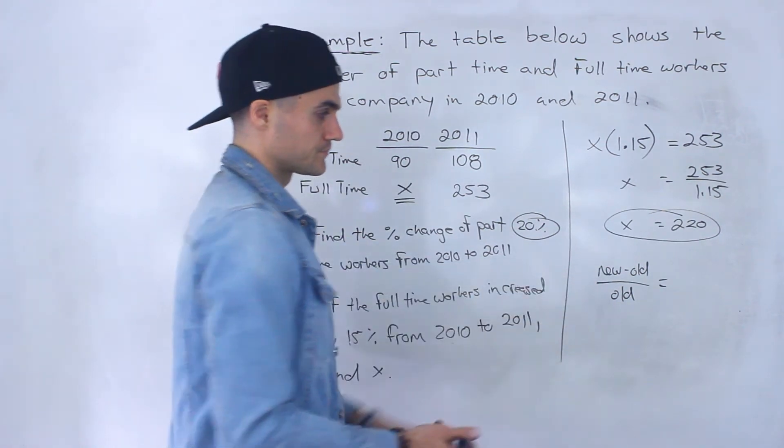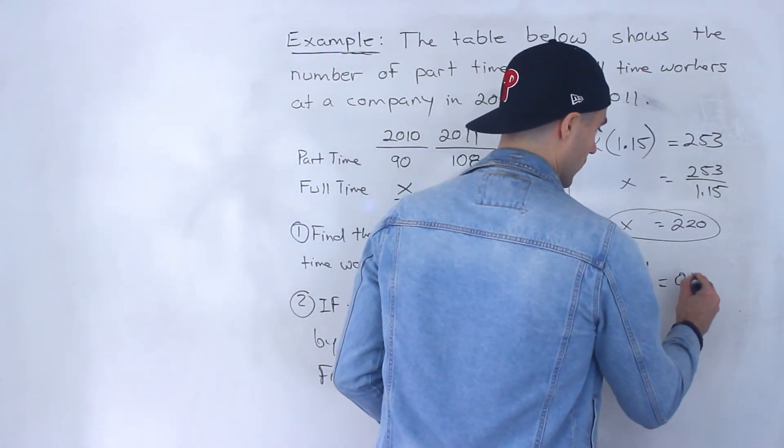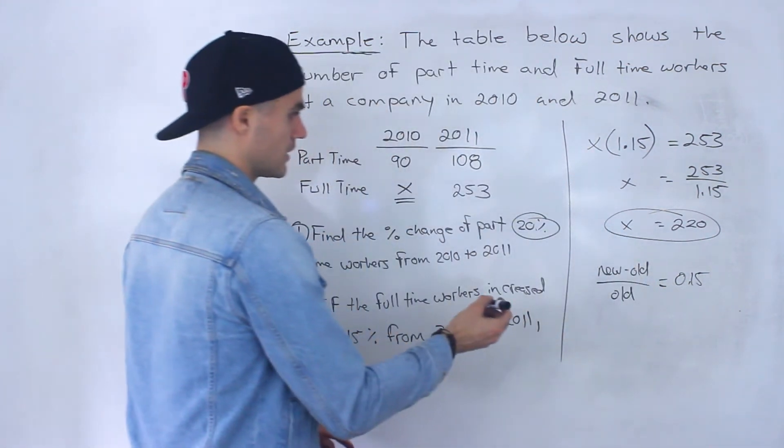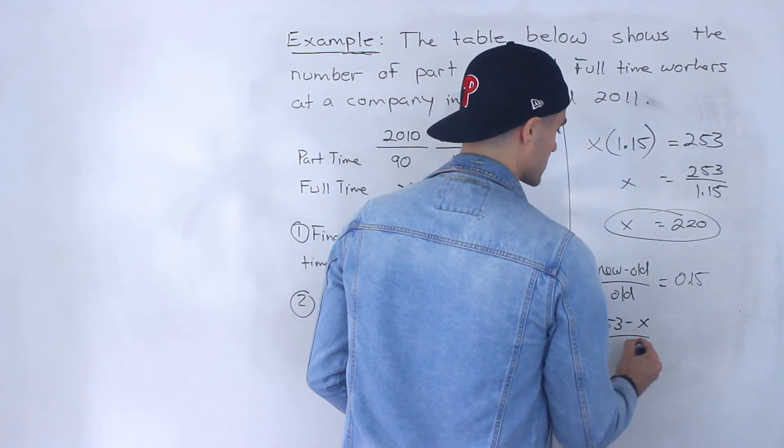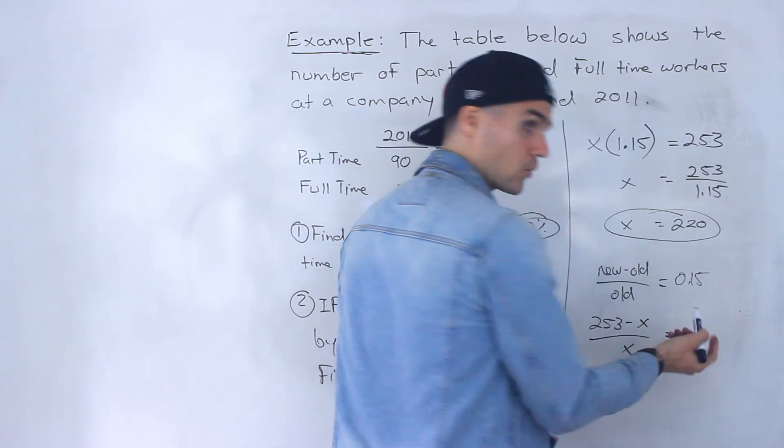And what you could do is you could just plug in what's the new value, 253 minus the old value x all over x. The old value is x equals 0.15. And then what you could do is you can cross multiply here.